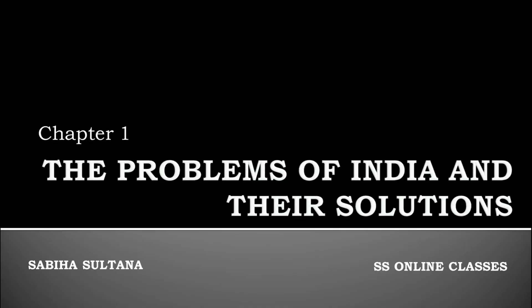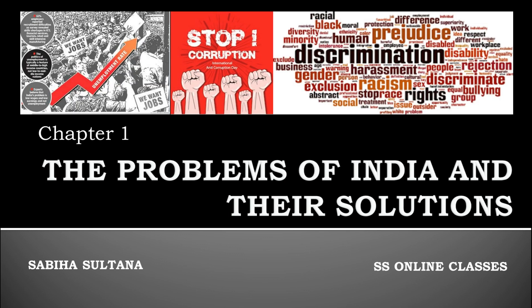Chapter 1: The problems of India and their solutions. The problems we are going to discuss in this chapter are mostly humane and national emergencies. They need a reasonable and humane solution, to be found only through good administration, social reformation, fast and efficient judiciary and many more. The solution needs to be backed by people's support.